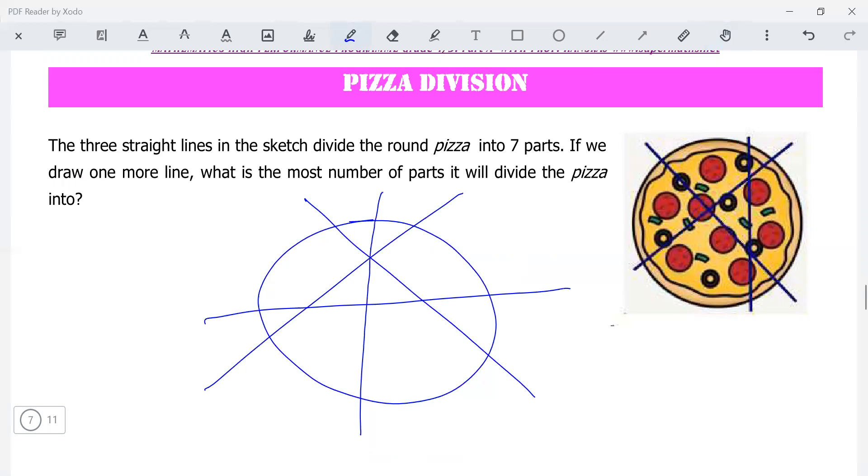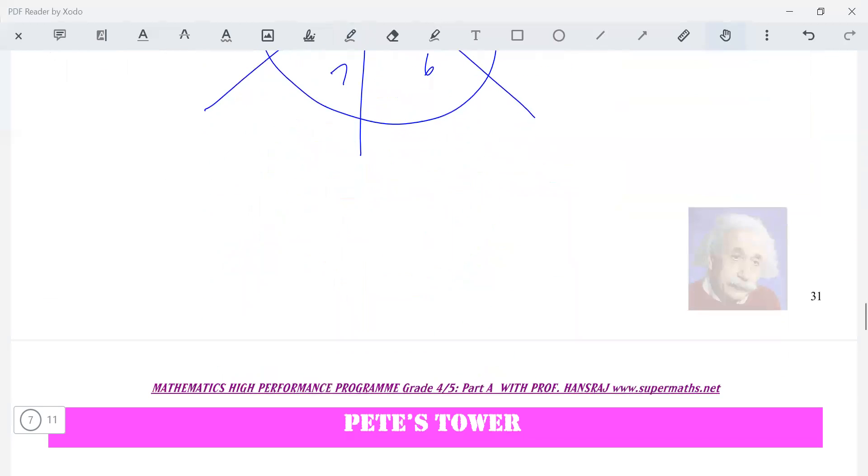If you draw it down here, what would you get? One, two, three, four, five, six, seven, eight, nine, ten. Is that the best? Can you beat that? Okay, we'll see in the lecture.